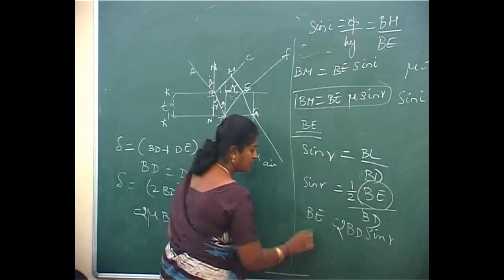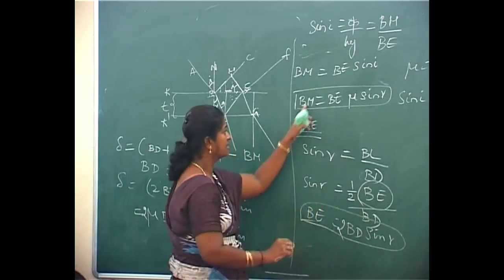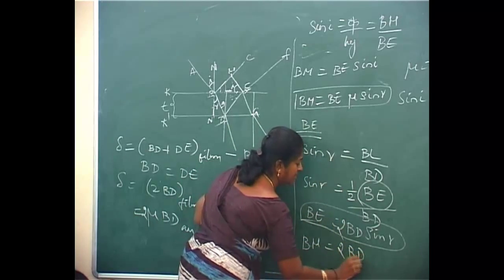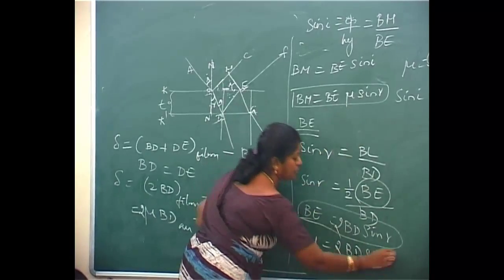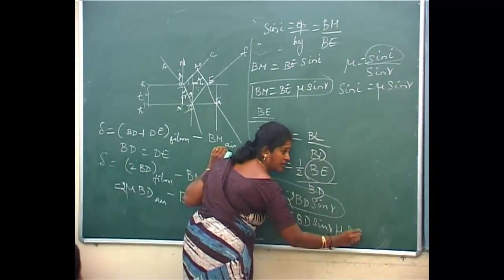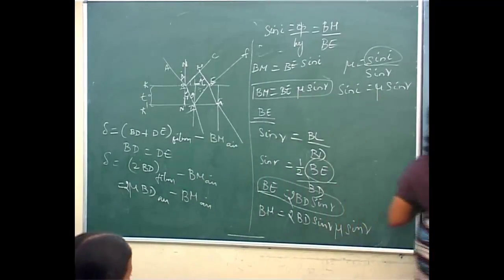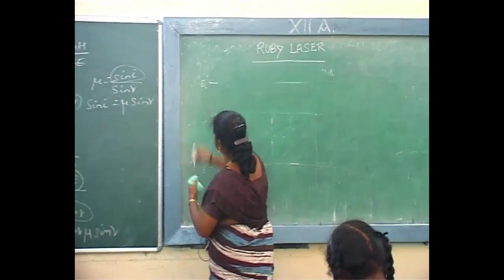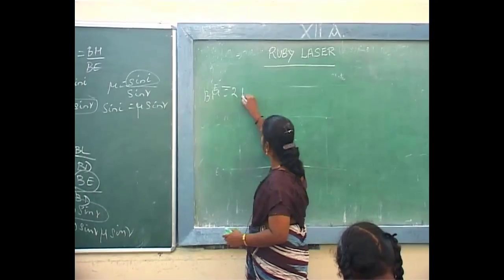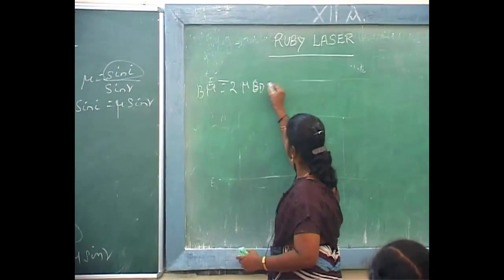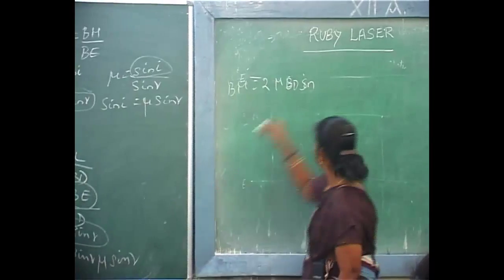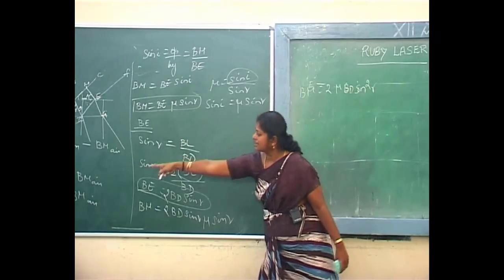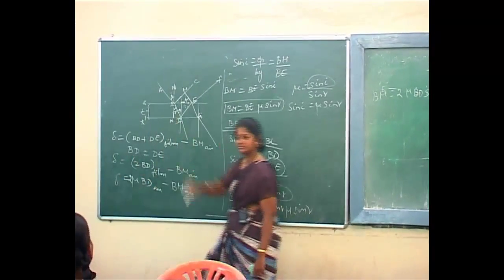On rearranging, you will get this. So now for BE, I will substitute here. It is equal to — for BE, it is 2BD sin R. So on simplification, BM is equal to 2μ BD sin²R. Right? That you will substitute for delta.